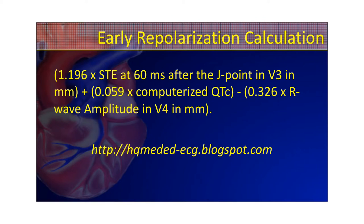Here is the formula. He does 1.196 times the amount of ST elevation at 60 milliseconds after the J-point in V3 in millimeters, and you add that to 0.059 times the QTc — the corrected QT interval — then you subtract 0.326 times the R-wave amplitude in V4 in millimeters. Super complicated to do in your head. But if you're working in a hospital where you have this patient for a prolonged period, take that 12-lead EKG and plug those numbers into his formula — I think he has it in an Excel spreadsheet — and it'll give you really good certainty whether you're dealing with early repolarization or an acute anterior wall myocardial infarction.